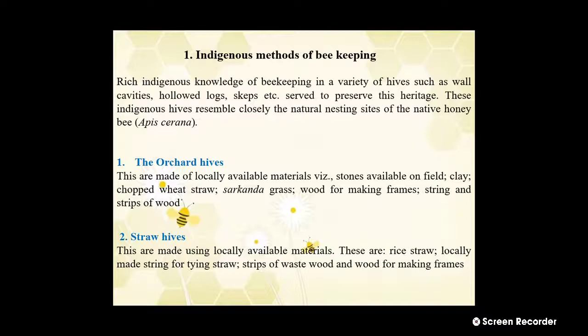The second type is the straw hive. These are made from locally available materials such as rice straw, locally made string for tying straw, strips of waste wood, and wood for making frames.